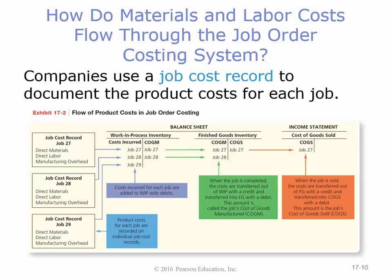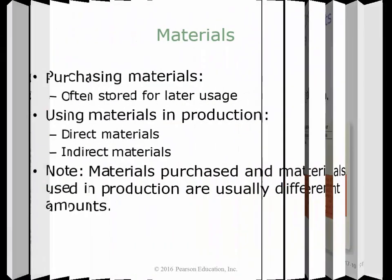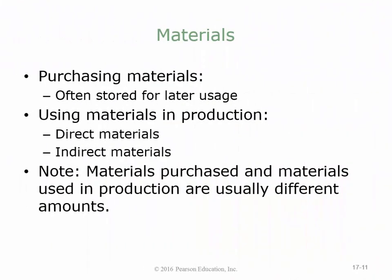Once we finish work in process, it flows to finished goods. Then once we sell it out of finished goods, it flows to the income statement as cost of goods sold. We'll go through this step by step.